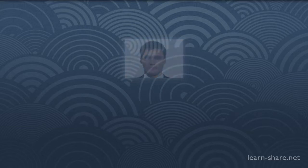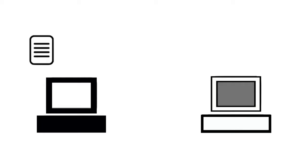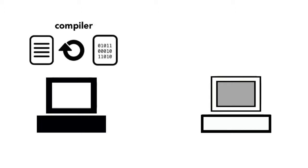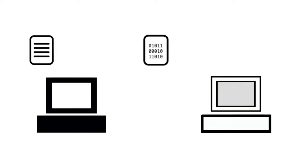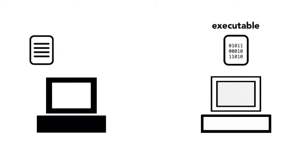Let's take an example to understand these two concepts better. Consider this: you have your computer and I have my computer, and you are going to write a program for me to run. With a compiled language, you write your source code, and you have a program called a compiler that goes to that source code and creates a separate file containing machine code. Then you just send me that file. This file is also known as an executable file, because I can directly execute it and run your program. You keep your source code, and I never see it.